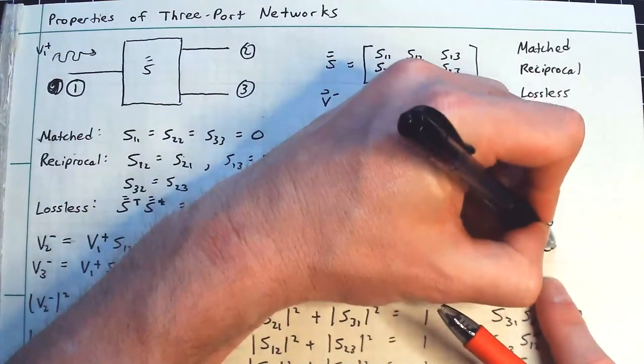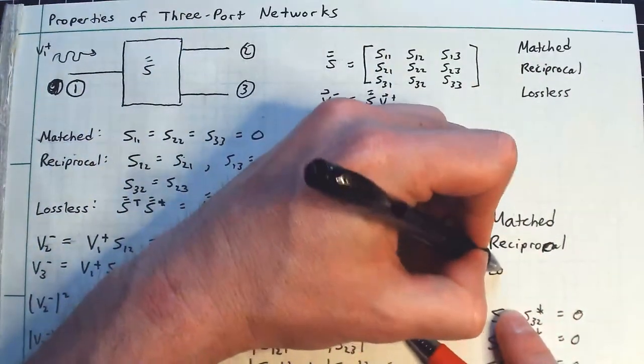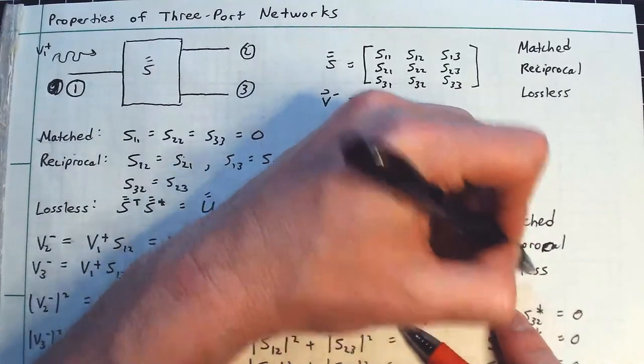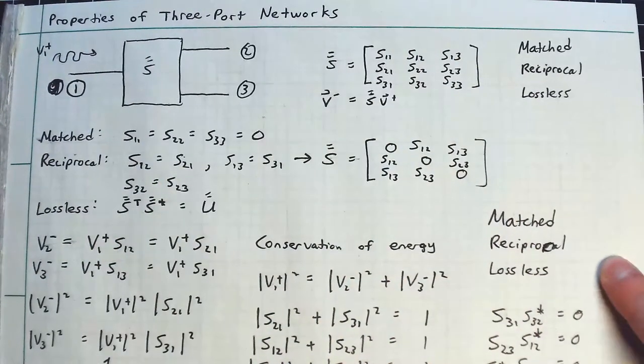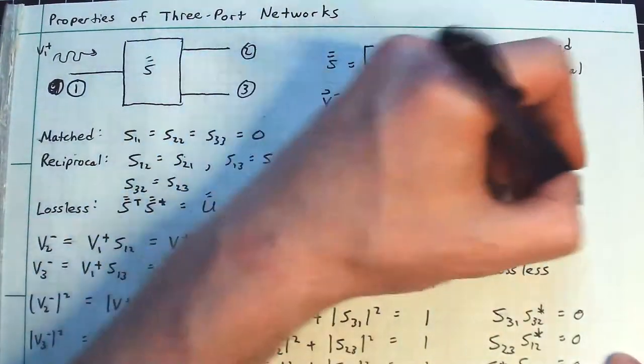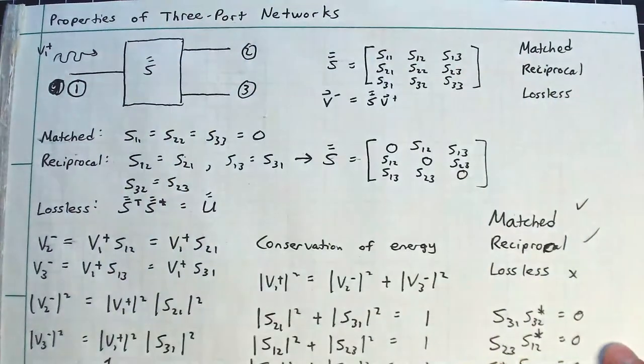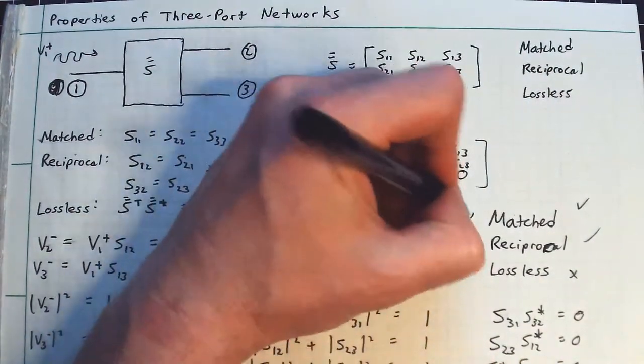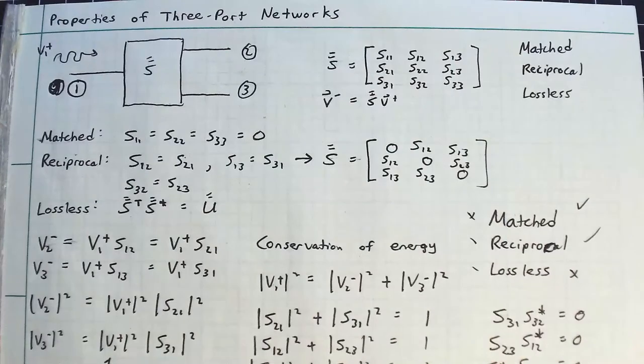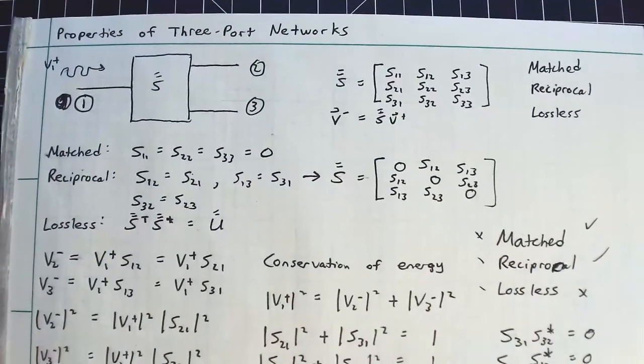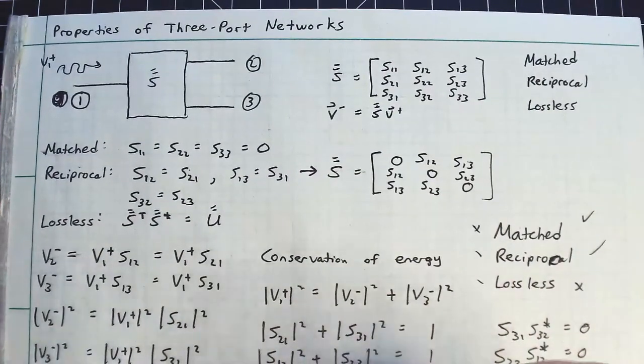So the rule is you can have matched at all three ports. You can have reciprocal. And then you have lossless. Pick any two. You have that and that, but not that. Or I can have this and this, but not that. So this is a fundamental property of a three-port network. You can have matched, you can have reciprocal, you can have lossless, but not all at once. You can only have two of those things satisfied simultaneously.